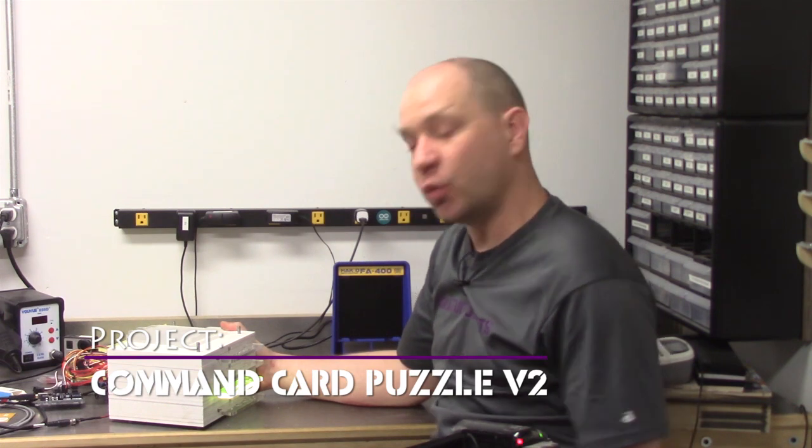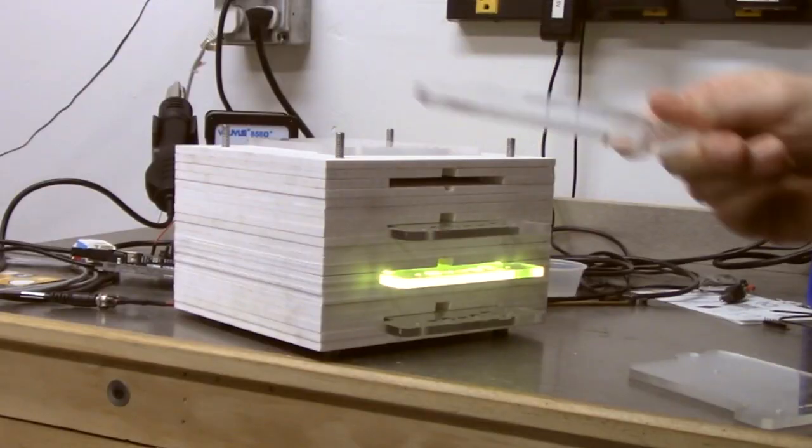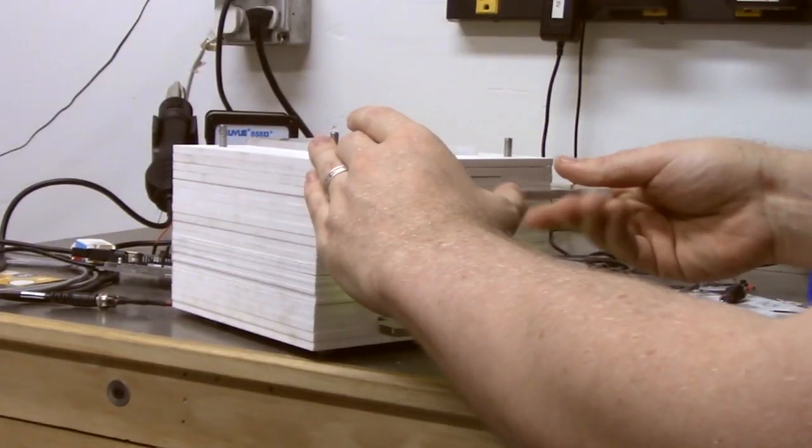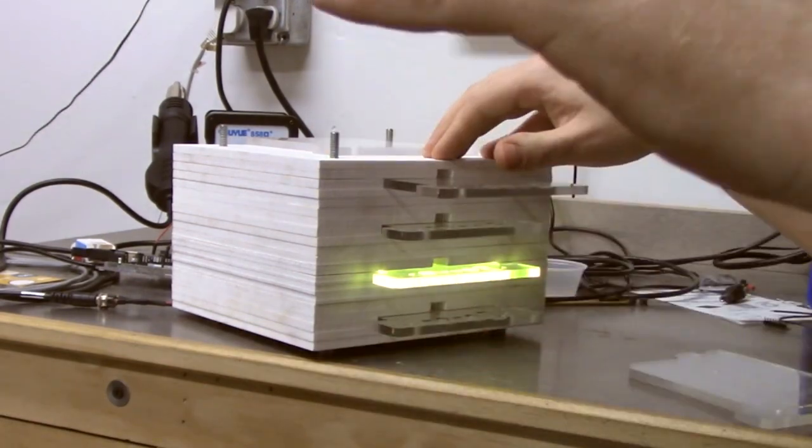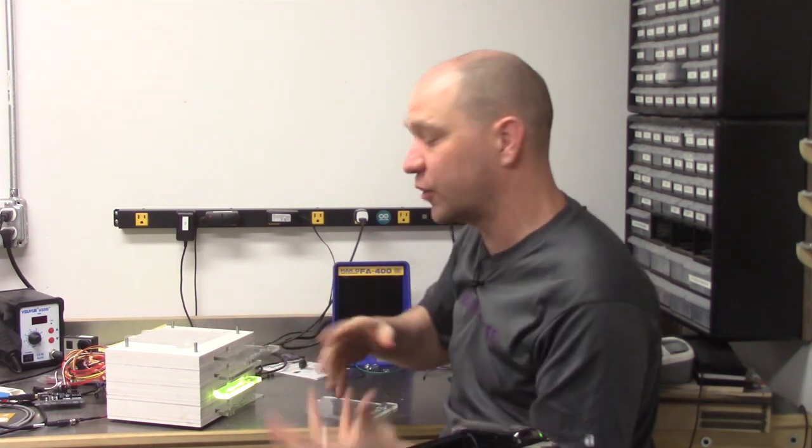You may remember from a previous video we did something very similar to this for the spaceship where you would take your acrylic card, put it in the slots, and in the old version there was an A and a B side and it would either light up if it was correct or light up regardless, but you still had to figure out the color order.